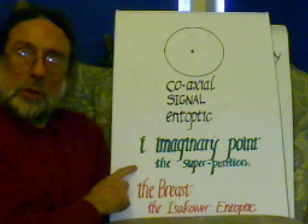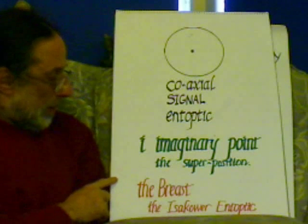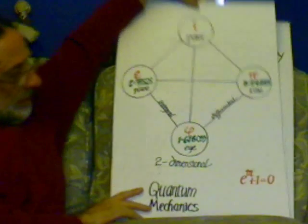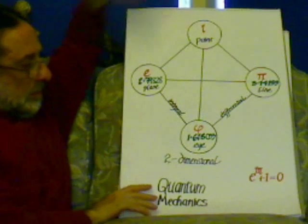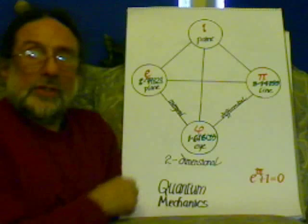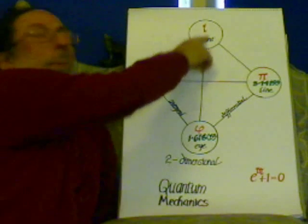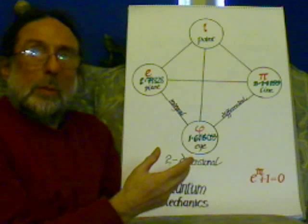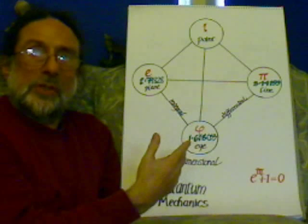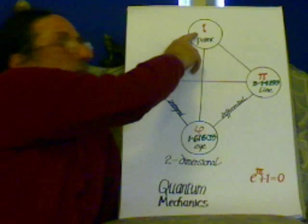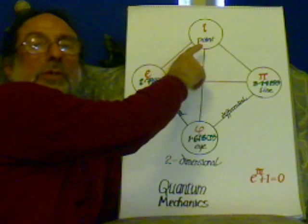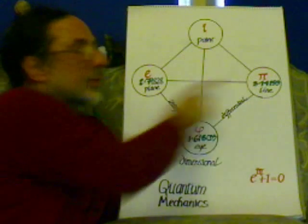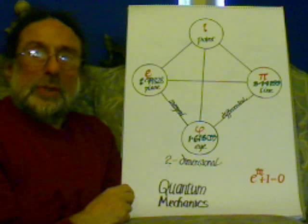The eye is the superposition, a point in mind. This is the breast, or the ear-to-power entoptic. Now this is the level of quantum mechanics, of quantum theory. We have the point — the eye — which we see in mind. We have the dark energy, so obviously it would be dark energy so we can see the light. The dark energy flows in through the coaxial signal and creates a point of light, which is eye. That point of light moves, and as it moves, it's a function of pi.